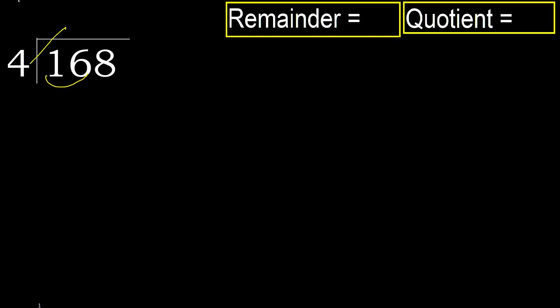4 multiplied by which number is nearest to 16 but not greater? 4 multiplied by 5 is 20, which is greater. 4 multiplied by 4 is 16, which is not greater. So 16 minus 16 equals 0.